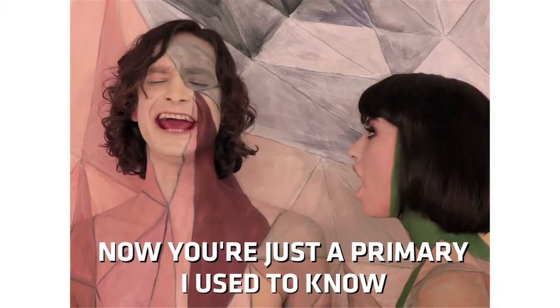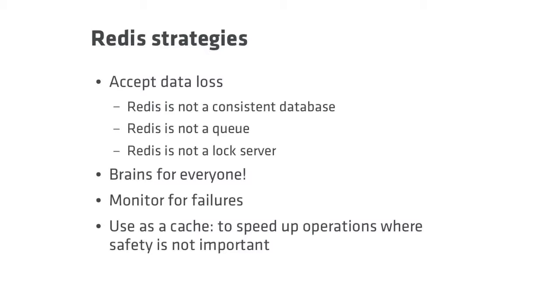The problem is that the primaries are evolving independently, we've allowed them to diverge, and there's no way to reconcile the data on both sides. What can you do if you're a Redis user? You can accept data loss — not all applications have to be consistent. In particular, you should know that Redis in a high-availability failover setup with replication is not a consistent database. It is not a queue. It is not a lock server. If you use it as a queue, you could enqueue an item once and check it out twice or check it out never. You can take a lock out on as many nodes as there are masters simultaneously.